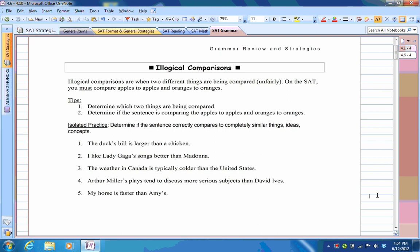With illogical comparisons, you want to make sure the two things that you're comparing are compared logically. So for example, you want to compare apples to apples or oranges to oranges. Just so you have a better idea of what I mean by that, let's look at some of the examples here.